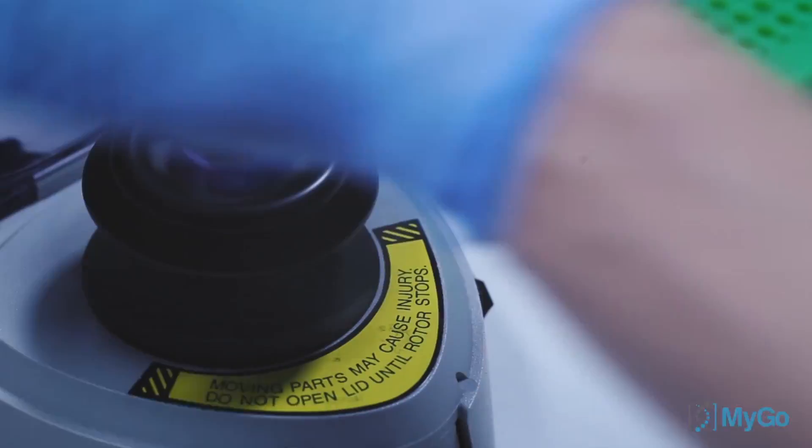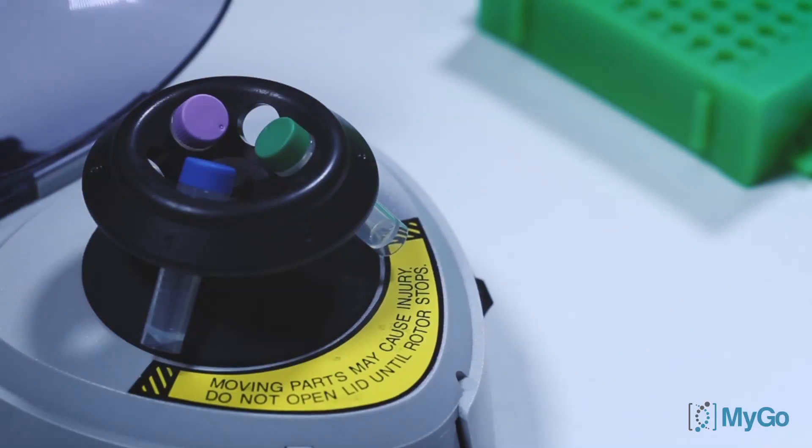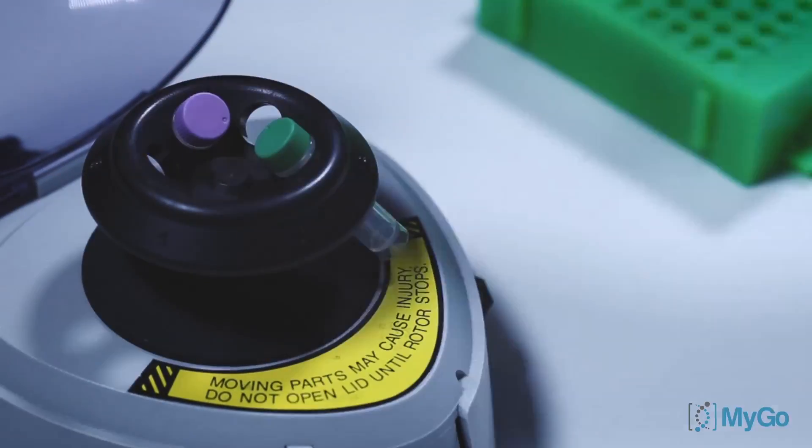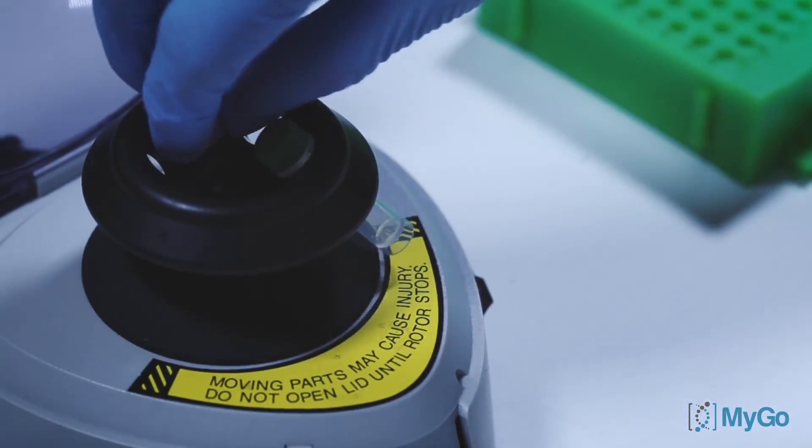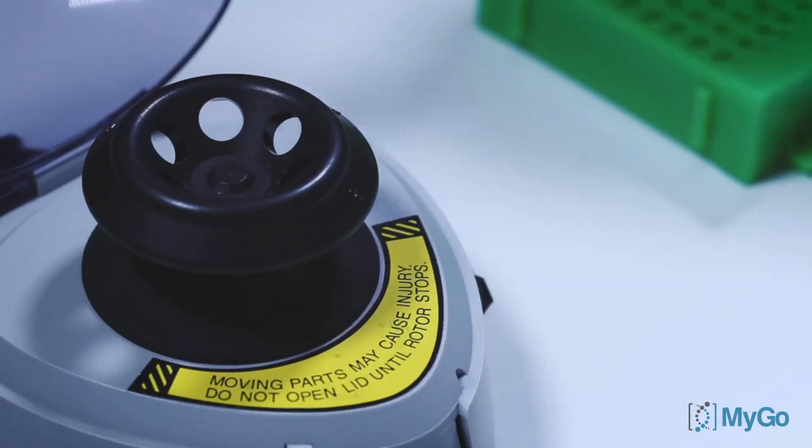Before mixing, centrifuge each tube to ensure all contents are at the bottom of the tube, and then leave for two minutes to settle. While we wait, we can get our tubes ready. We recommend using our MYGO 8-well strips.